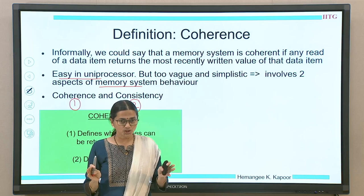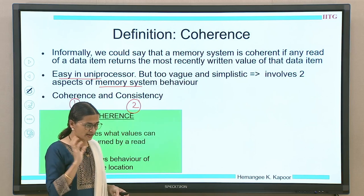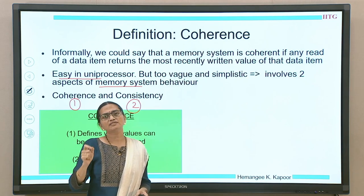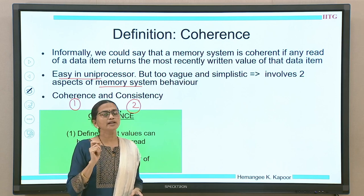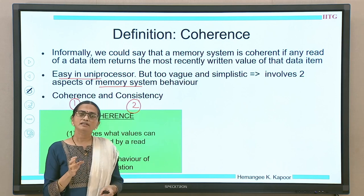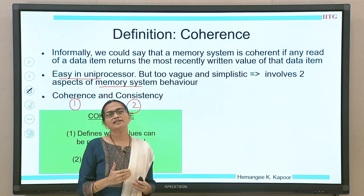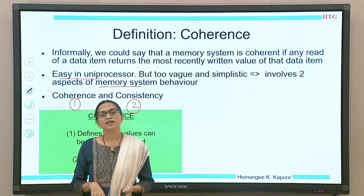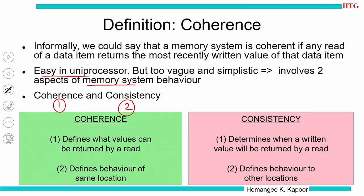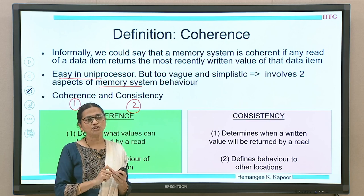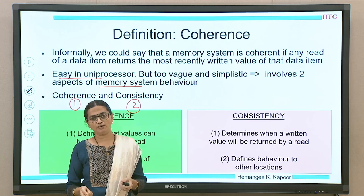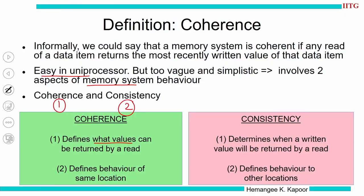Memory coherence essentially defines what values a read will return — when a process reads a value, what actually is the value it is going to get. This is handled by coherence, and it defines the values with respect to a given location. So if I am talking of a location x and I read location x, what exactly is the value I am going to get is handled by the concept of coherence. The concept of consistency talks about when a written value will be returned — that is, when I read a variable x, what is the time duration after the write that I am able to read this value. So coherence defines what values will be returned, and consistency defines when a written value will be read by another process.